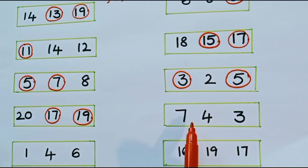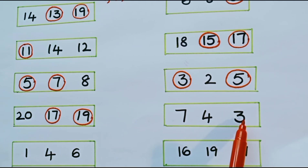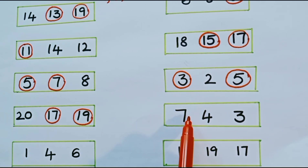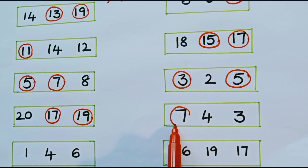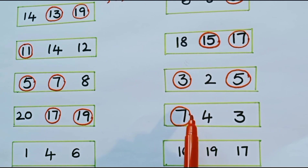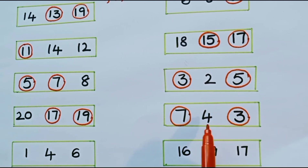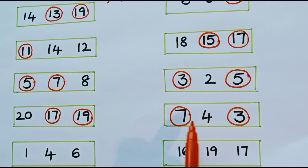What are the numbers in the next row? 7, 4, 3. What are the odd numbers? 7 is an odd number, and 3 is also an odd number. Is 4 odd or even? It is an even number. So 7 and 3 are odd numbers in this row.